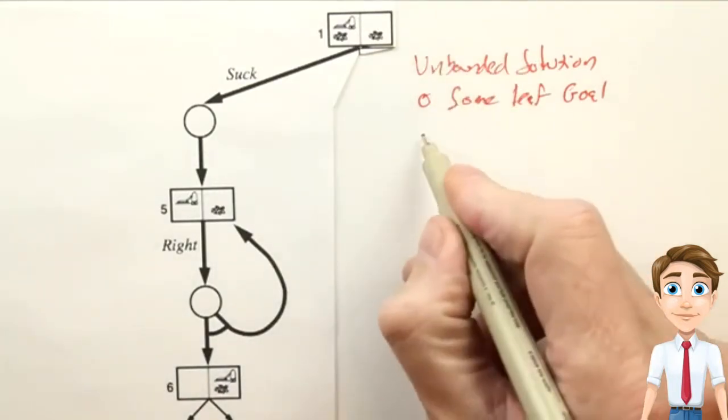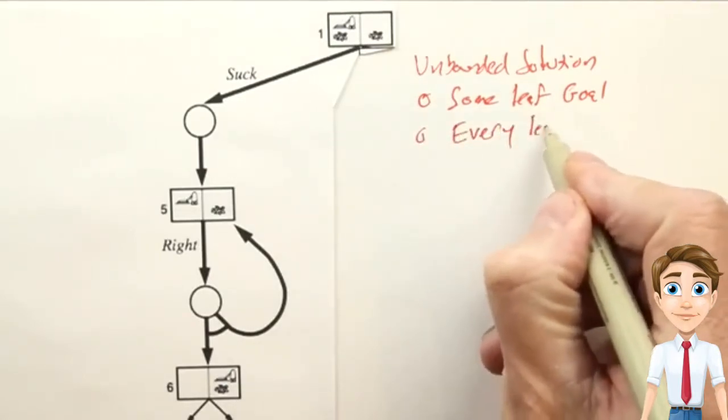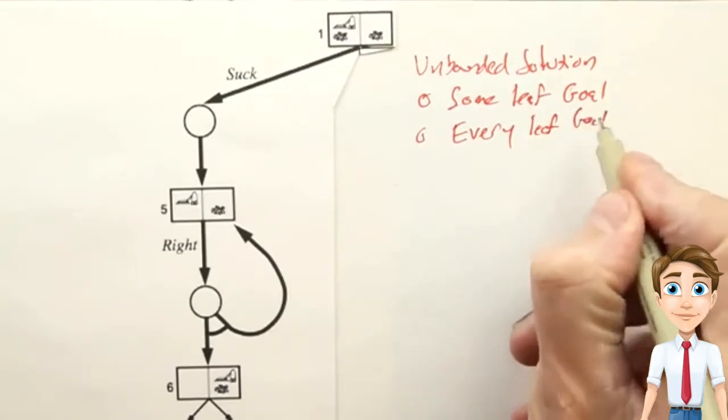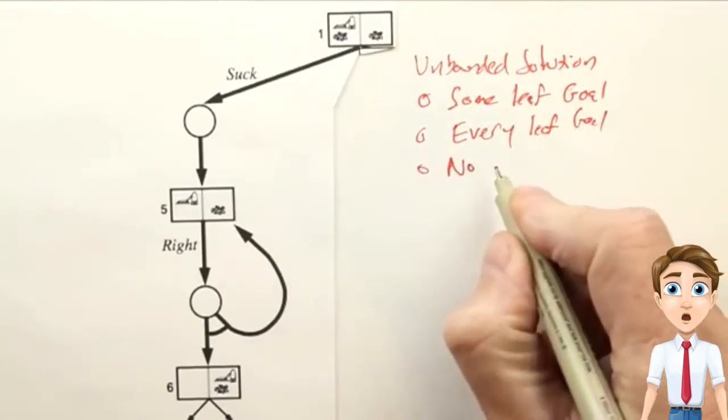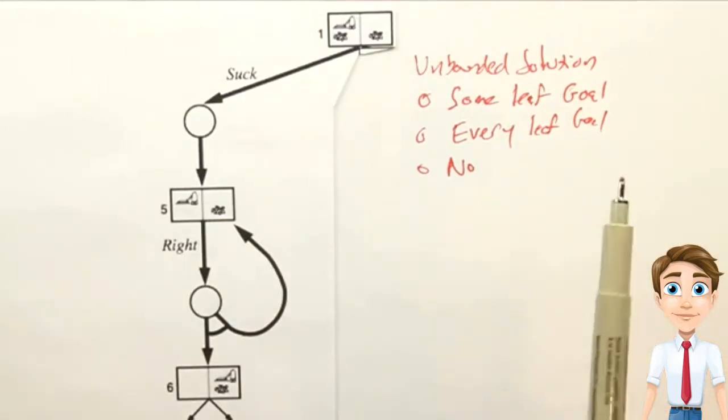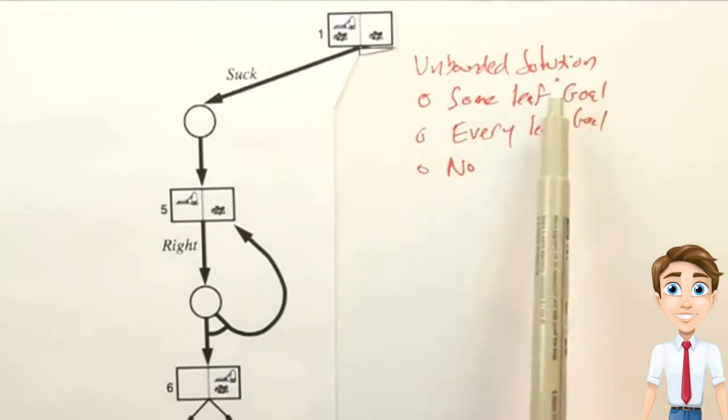Or do we need to guarantee that every leaf is a goal? Or is there no possible guarantee that will mean that for sure we've gotten a solution, although the solution may be of unbounded length?